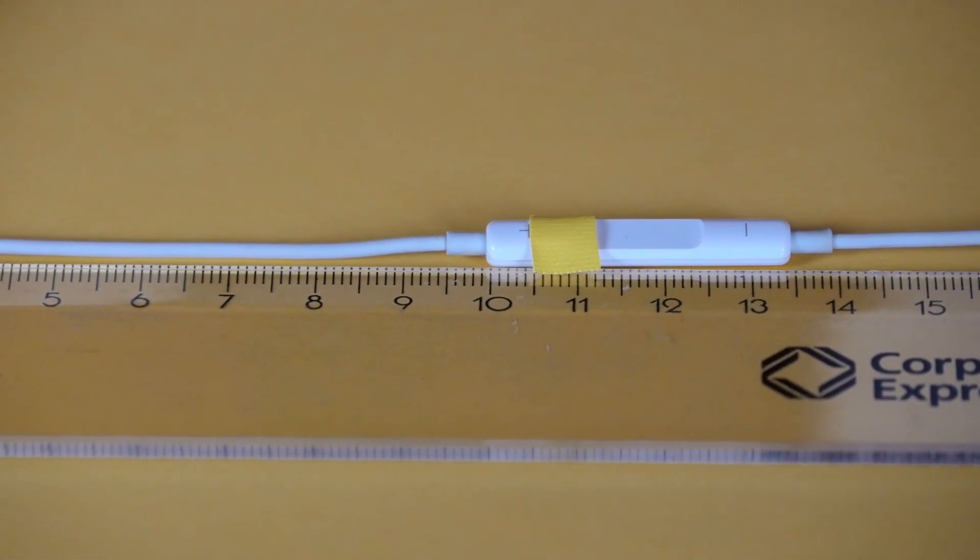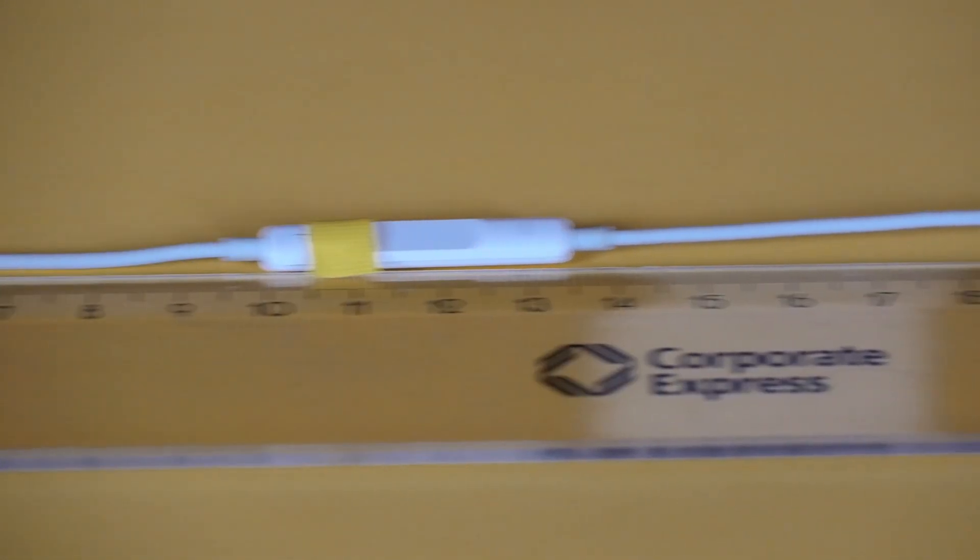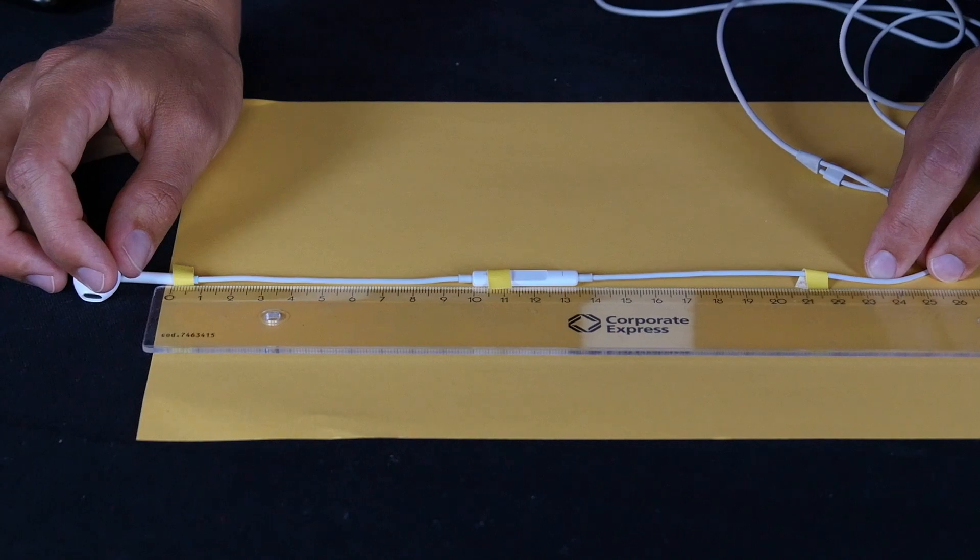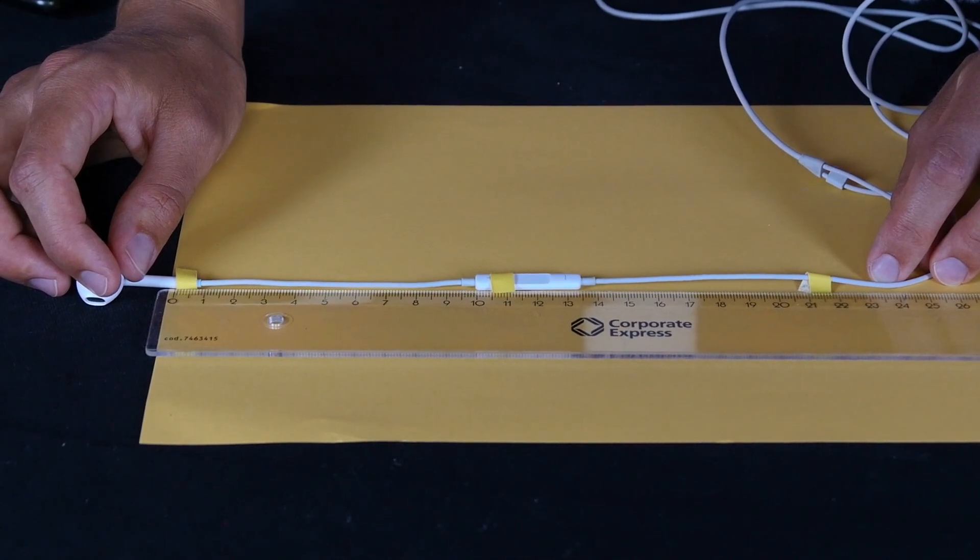The product of the wavelength, 11 centimeters in our case, and the frequency, 3000 hertz in our case, gives the speed of sound of air, i.e. about 330 meters per second.